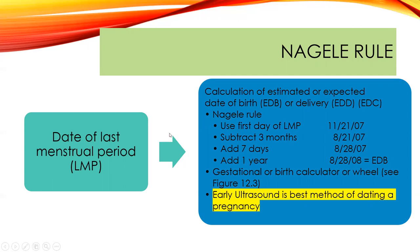Naegele's Rule uses the first day of the last menstrual period. For example, if that date is 11-21-07, subtract three months to get 8-21-07, then add seven days to get 8-28-07, then add one year to get 8-28-08. That is the expected date of birth or delivery. This is a quick way of figuring out the expected due date, and you need to know Naegele's Rule — NCLEX loves this question.